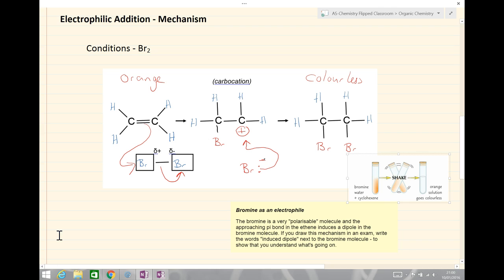So this allows us to have a test for unsaturation where we have the haloalkane reacting with, forming the dihaloalkane from the alkene and the bromine. So here we have an example of bromine water and cyclohexene shaking on the orange on the left hand side there. We go to a colorless solution on the right hand side because of the electrophilic addition reaction.